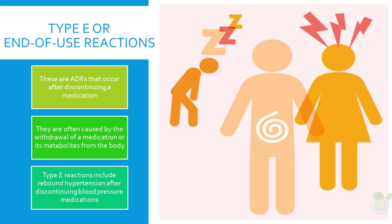Type E, or End-of-Use Reactions, are ADRs that occur after discontinuing a medication. They are often caused by the withdrawal of a medication or its metabolites from the body. Examples of type E reactions include rebound hypertension after discontinuing blood pressure medications, or seizures after discontinuing anticonvulsant medications.